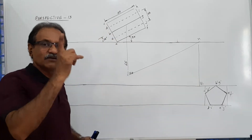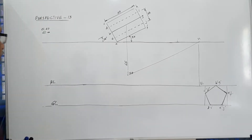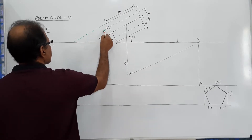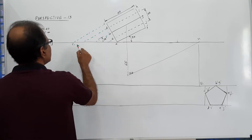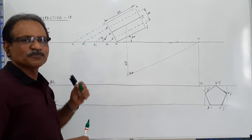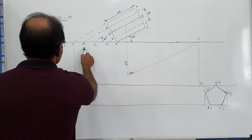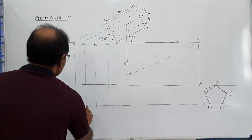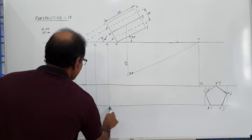I am going to draw this by single vanishing point. I extend all these edges to the picture plane line — it cuts C1, D1, B1, E1. A already touches the picture plane, so there is no need to extend it. Drop them down to GL to get capital C1, capital D1, capital B1, capital E1.